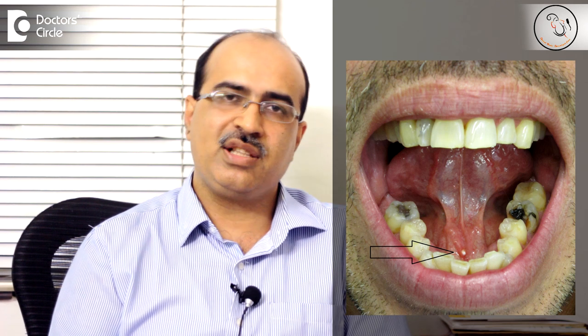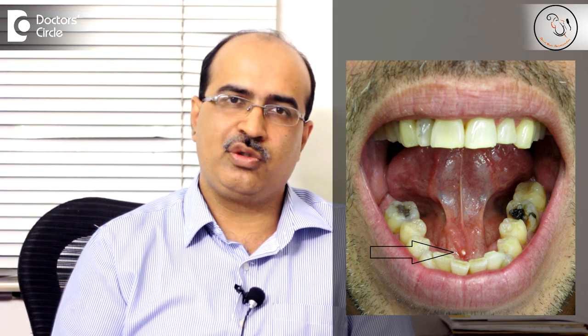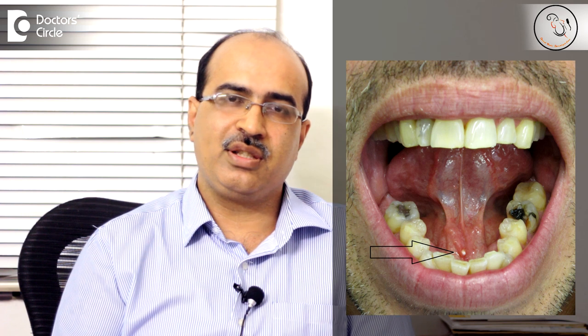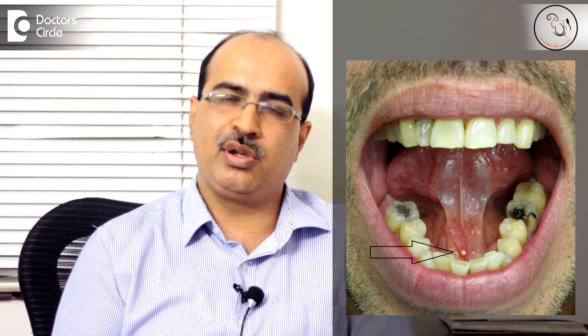Diagnosis of salivary gland stones largely arises after we suspect whether a person can have them. What we usually look for is somebody coming with the same gland getting infected more than two times repeatedly, with swelling of the gland, redness around the gland especially when they eat food, and pain and fever. These are typical symptoms of obstruction. Once somebody presents with more than two episodes of the same gland getting infected, we start suspecting whether this person could have a stone, stricture, or stenosis.